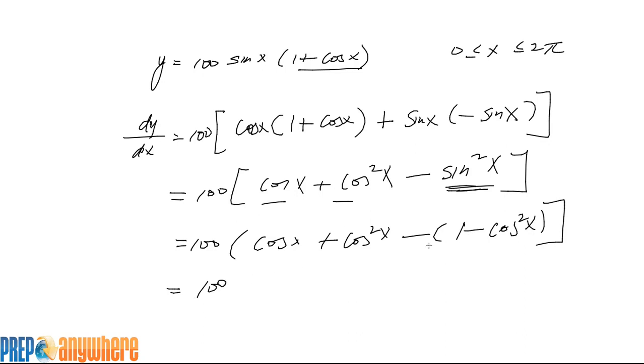So if you expand that, you're going to get cosine of x plus cosine squared x minus 1 plus cosine squared x.